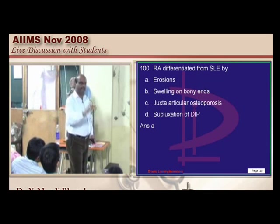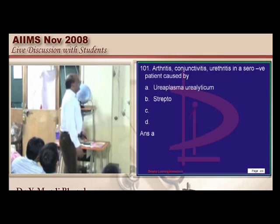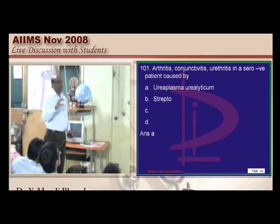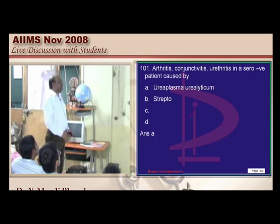If you are able to show erosions on the joint, it is unlikely to be SLE arthritis — that is always the rule. Arthritis, conjunctivitis, and urethritis are all caused by Reiter's syndrome, which is caused by Ureaplasma urealyticum.